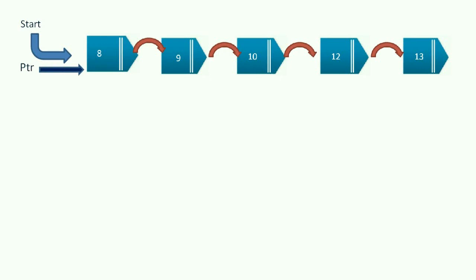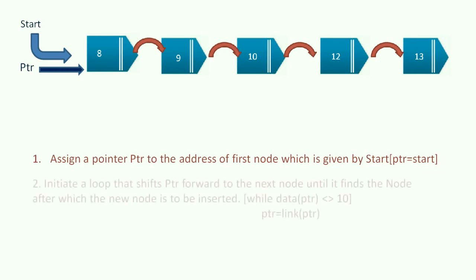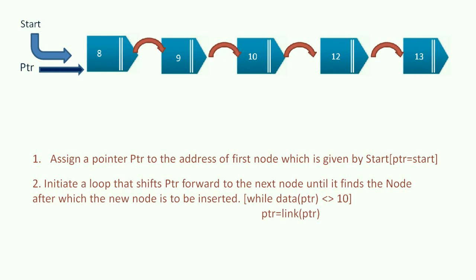Let there be a pointer PTR that points to start. Now, initiate a loop that shifts PTR forward to the next node until it finds the node after which the new information is to be inserted.